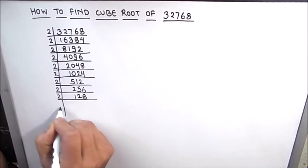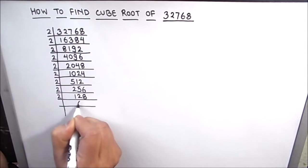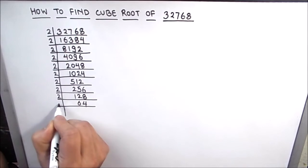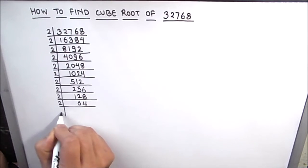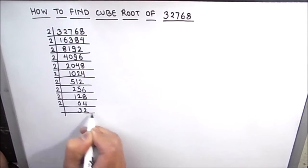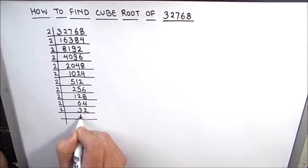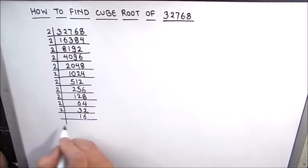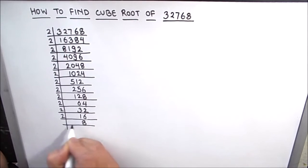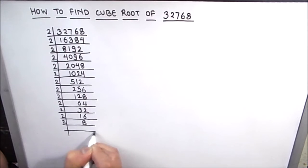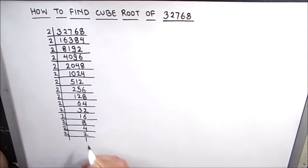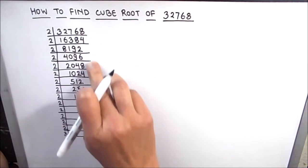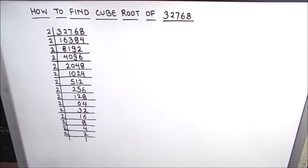128 is again divisible by 2: 2 times 6 is 12 and 2 times 4 is 8. Again we divide by 2: 2 times 3 is 6 and 2 times 2 is 4. Then 2 times 4 is 8, 2 times 2 is 4, 2 times 1 is 2. Now we have got all the prime factors of 32768.